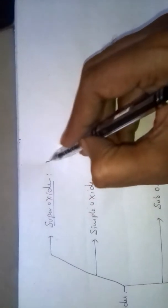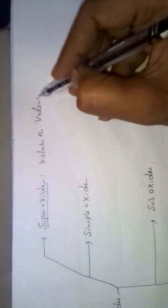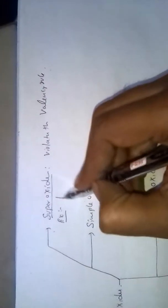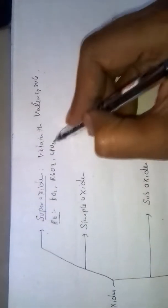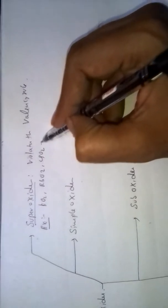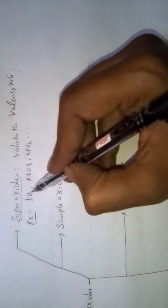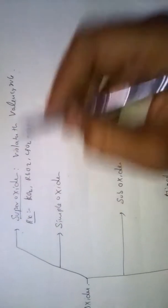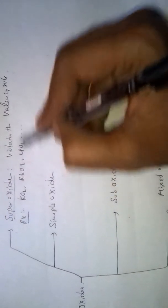Super Oxides violate the valency rule. Examples of super oxides are KO2, RbO2, CsO2 — Cesium Super Oxide, Rubidium Super Oxide and so on. In these oxides, the oxygen valency is 1/2, whereas the common valency of oxygen is 2, so they violate the valency rule.